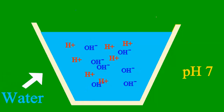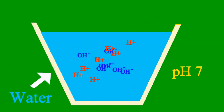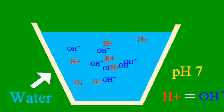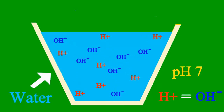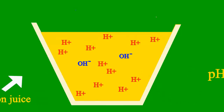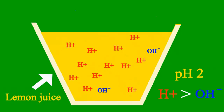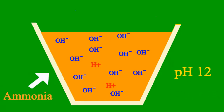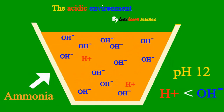When the pH is 7, the sample is neither an acid nor a base. Less than 7, it's an acid. More than 7, it's a base.